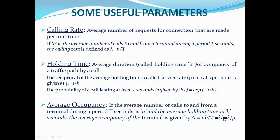Since H equals 1/mu, the average occupancy becomes lambda/mu. So A equals lambda/mu — A is basically the traffic intensity. Lambda is the birth rate, mu is the death rate. This is a very important relationship that we will use later.